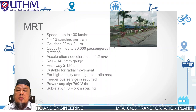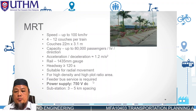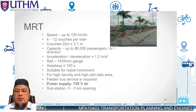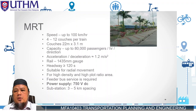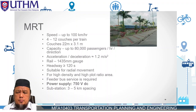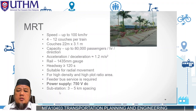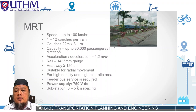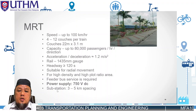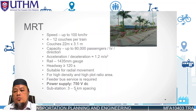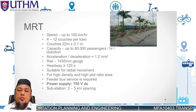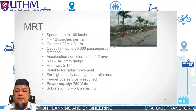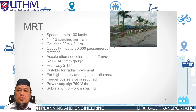Bus services are also required to transport passengers to park-and-ride areas to give additional coverage. The MRT power supply is 750 volts, with substations spaced at 3 to 5 kilometres.